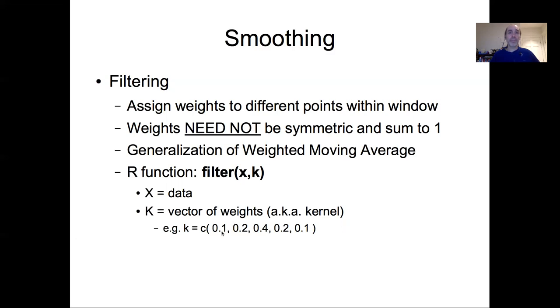That would give us a weighted moving average, but it wouldn't have to be symmetric. If I wanted to do a simple moving average, I could set all of these to equal, so each could go to 0.2, and it would sum to one and give me a simple weighted average.